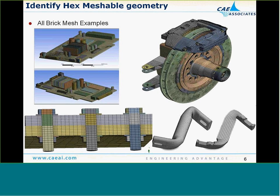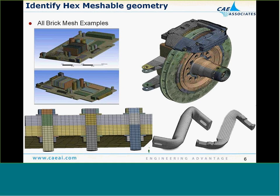Here are some examples of types of problems that are hex meshed: a circuit board with cooling fins, chips, and assembly components that are amenable to hex meshing because they have uniform geometry supporting a source-to-target sweep representation. Other examples include a wheel hub with brake, bolted connections, and various struts — all hexahedrally meshed with little or no effort.